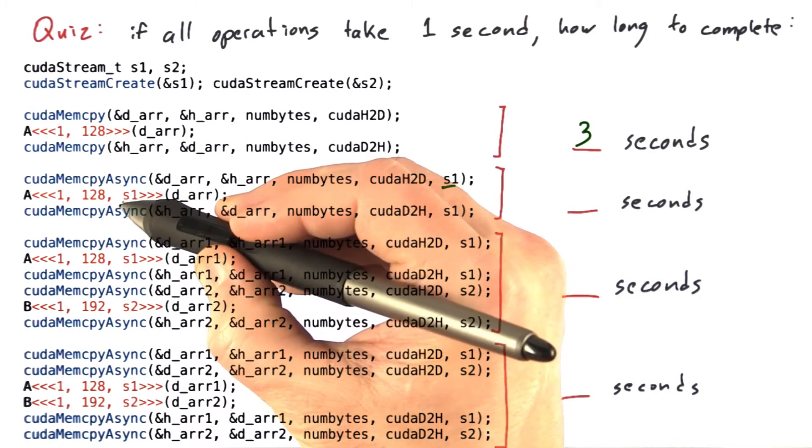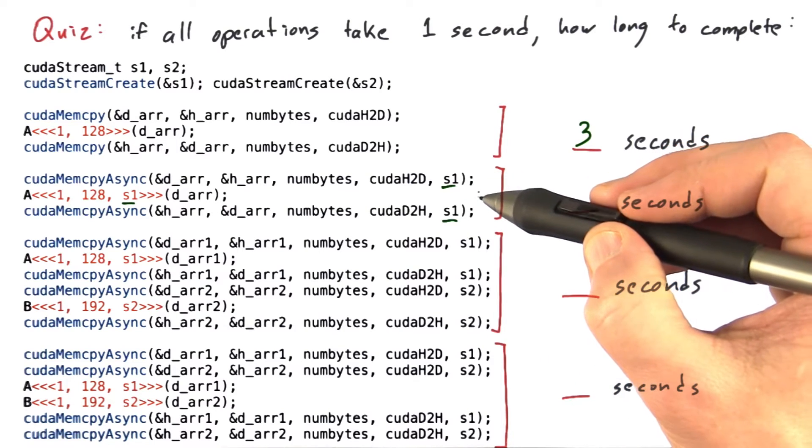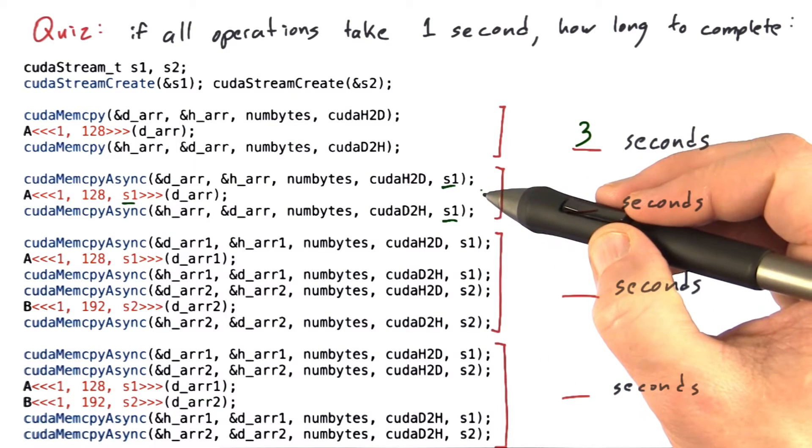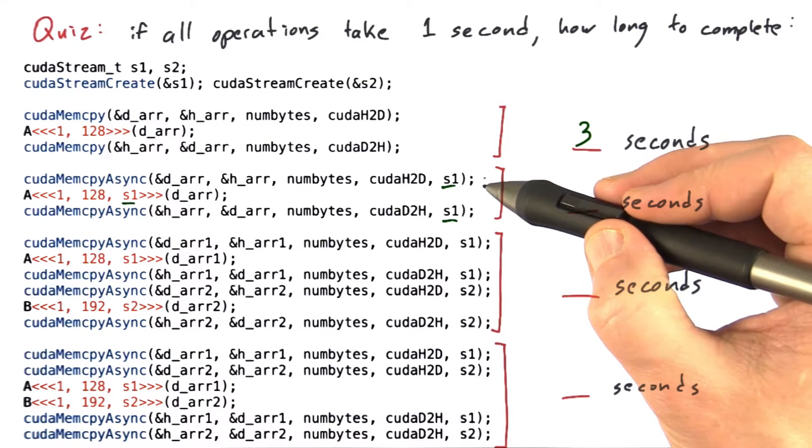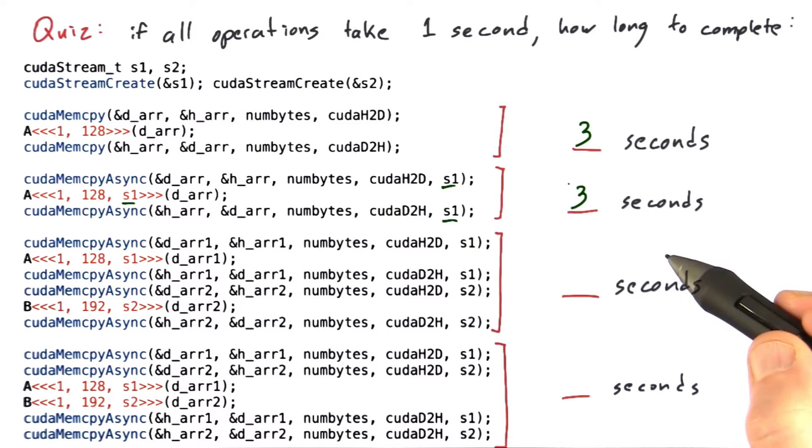This next code snippet does declare a stream. It puts them all in S1. Since all three operations are in the same stream, the previous operation must complete before the next one can start. So once again, this will take a second, this will take a second, this will take a second. The final result will be ready in three seconds.